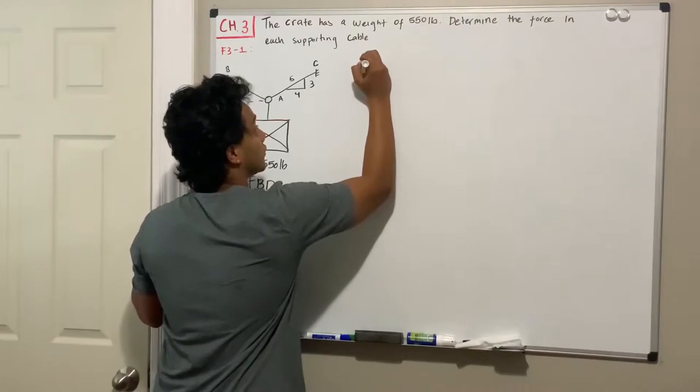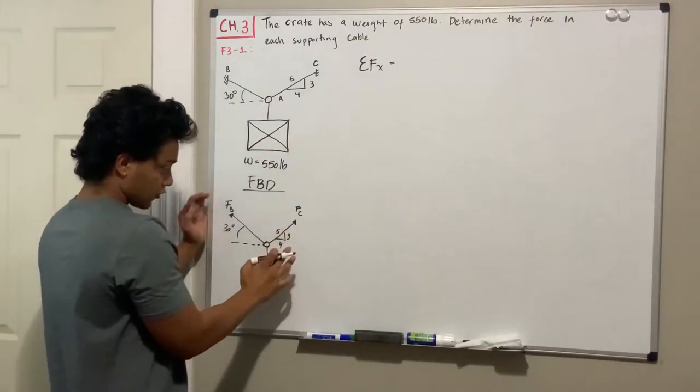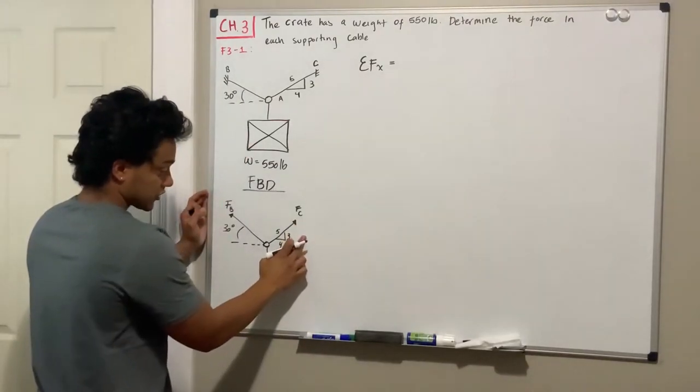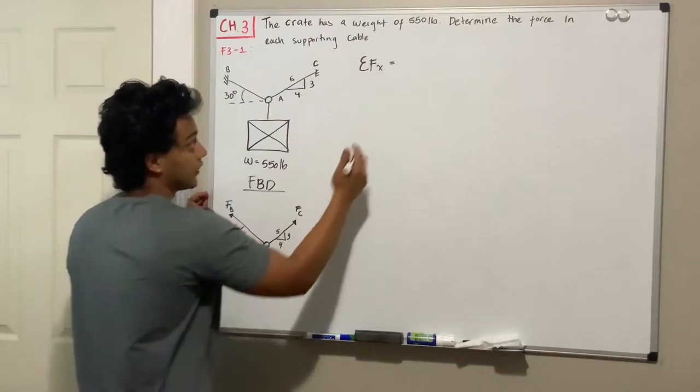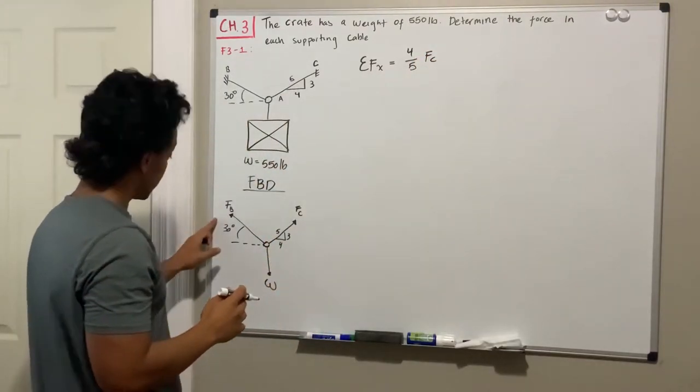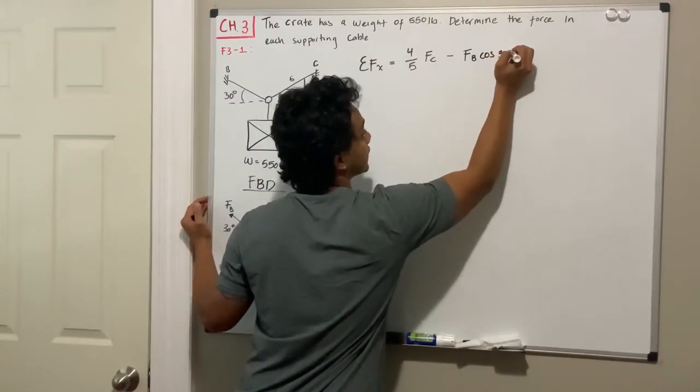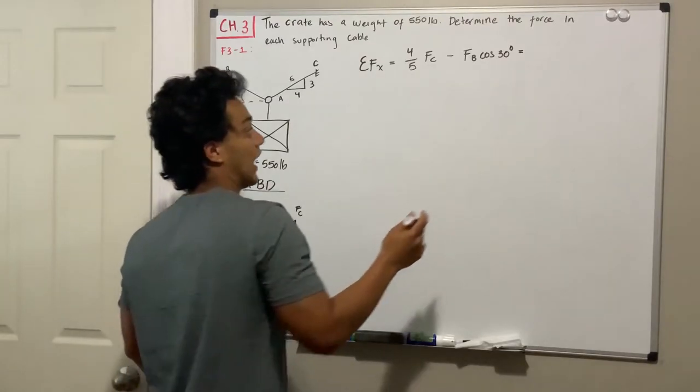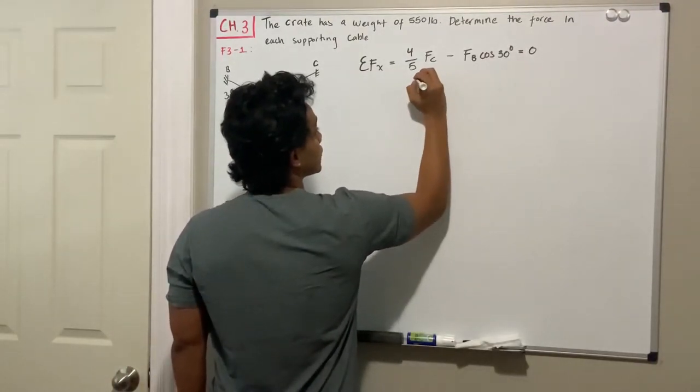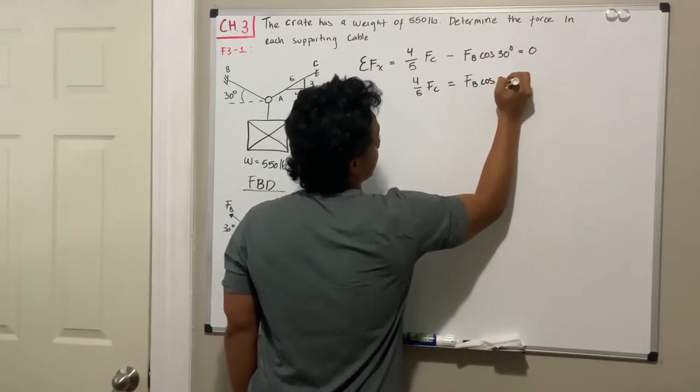So in order to do this, we are going to do the summation of forces in the x-direction. Which forces are going in the x-direction? My force C is going to the right and my force B is going to the left. If we start with force C, I have 4 out of 5, so I have 4/5 of the force C going to the right, which is positive, minus the force B multiplied by the cosine of 30 degrees. And this addition should be equal to 0. So basically, if I clean this equation up, I get that 4/5 of the force C should be equal to the force B multiplied by the cosine of 30 degrees.